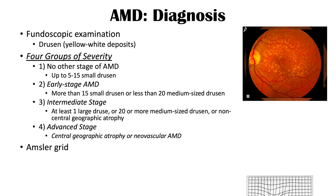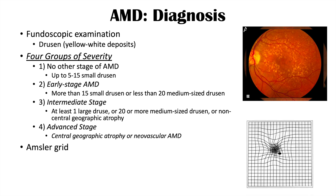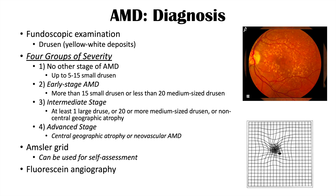Additional diagnostic methods include fluorescein angiography and optical coherence tomography (OCT). The Amsler grid, with its characteristic distortion in metamorphopsia, can also be used in early stages to assess the progression of macular degeneration and for self-assessment over time.